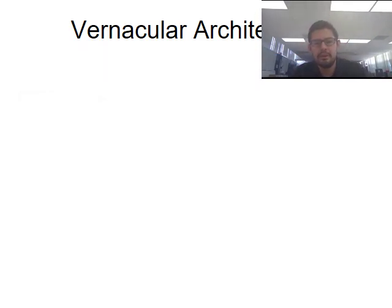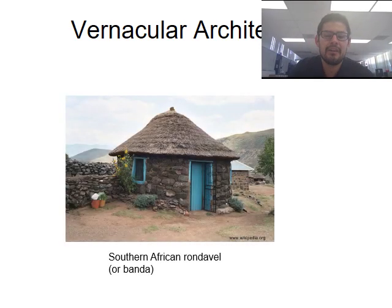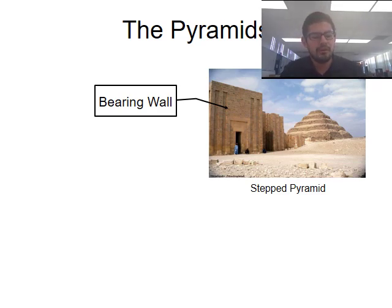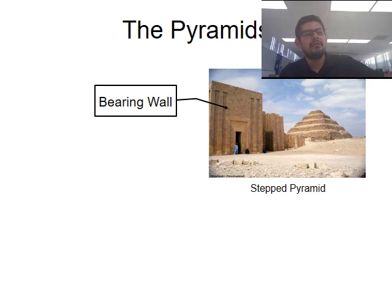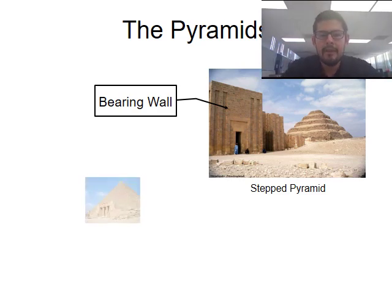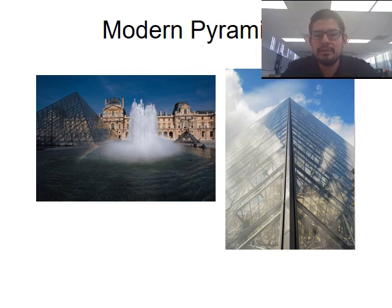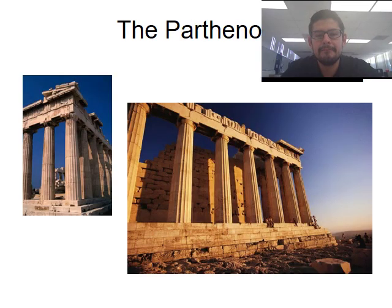Some different examples include the Southern African Rondeval or Banda. The pyramids are also an example of vernacular architecture, but they also bring up a new key term: bearing wall. A bearing wall is a wall used to support not only the weight of itself but also the roof above it — it can bear the weight of other objects resting on it. We notice bearing walls not just in Egypt but also in Mexico, and even in modern-day pyramids like the Louvre in France.